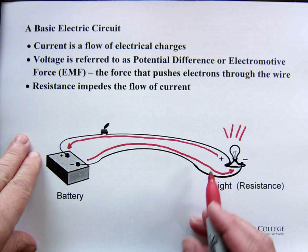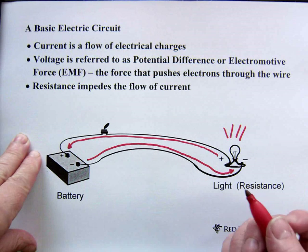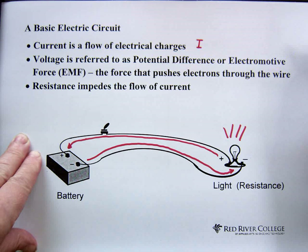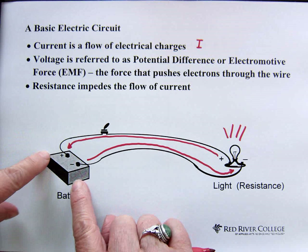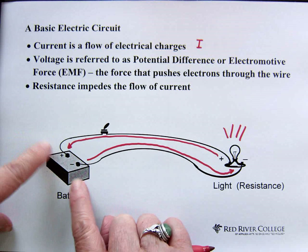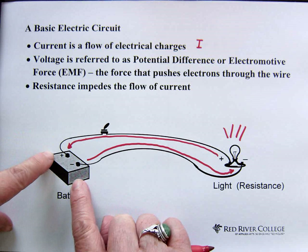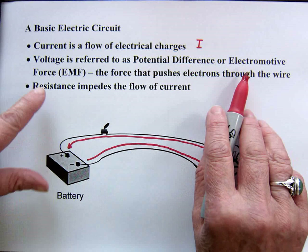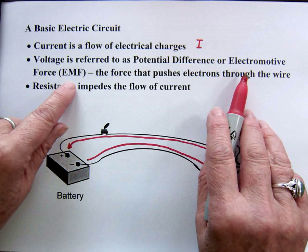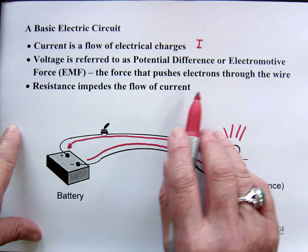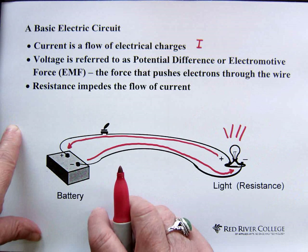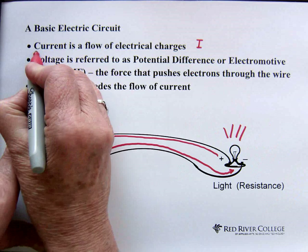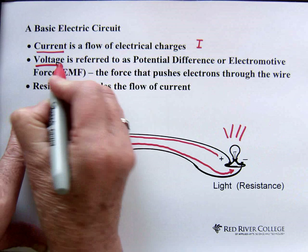Current — the current that flows through this line — has the symbol of I. I is the symbol for current. Voltage, which is what we normally think about when we think about a battery, has a particular voltage. That is referred to as potential difference, or electromotive force, sometimes termed EMF. And that is the force that pushes the electrons through the wire. The last thing we talk about in circuits — these are the three important points — current, voltage, and resistance.